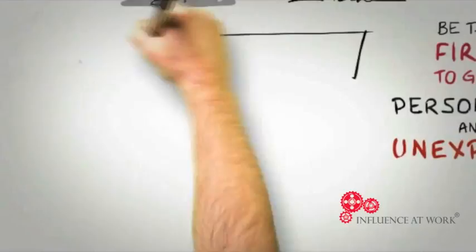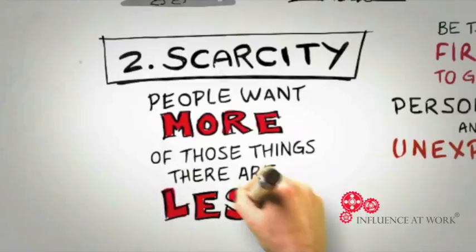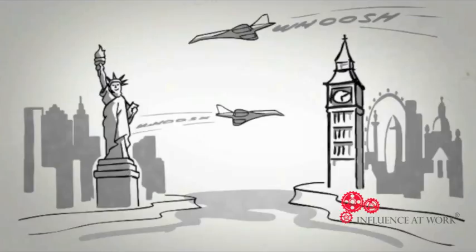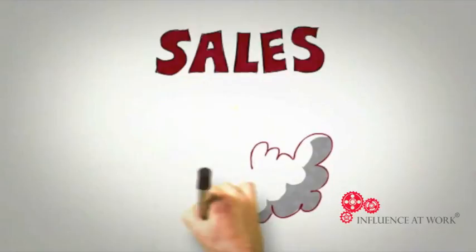The second universal principle of persuasion is scarcity. Simply put, people want more of those things they can have less of. When British Airways announced in 2003 that they would no longer be operating the twice-daily London-New York Concorde flight because it had become uneconomical to run, sales the very next day took off.